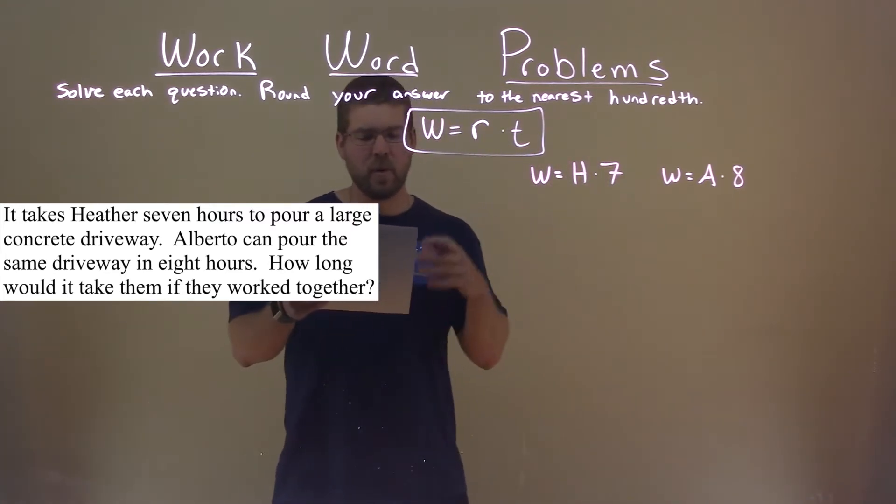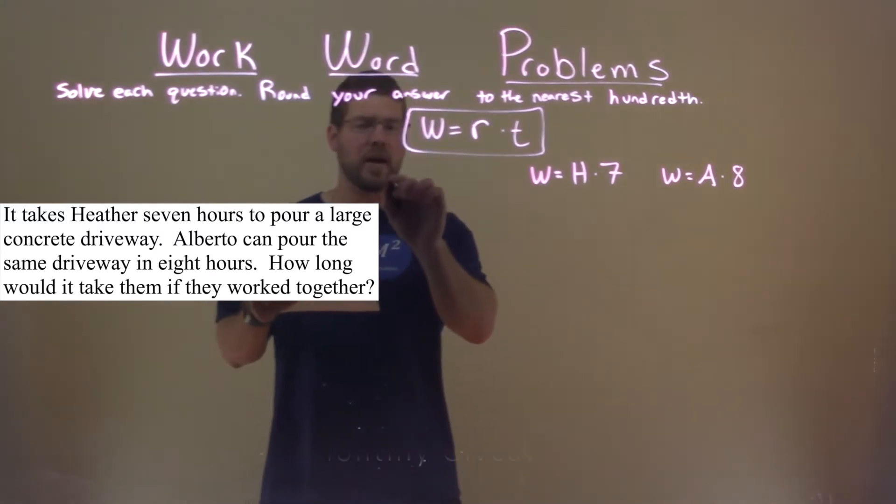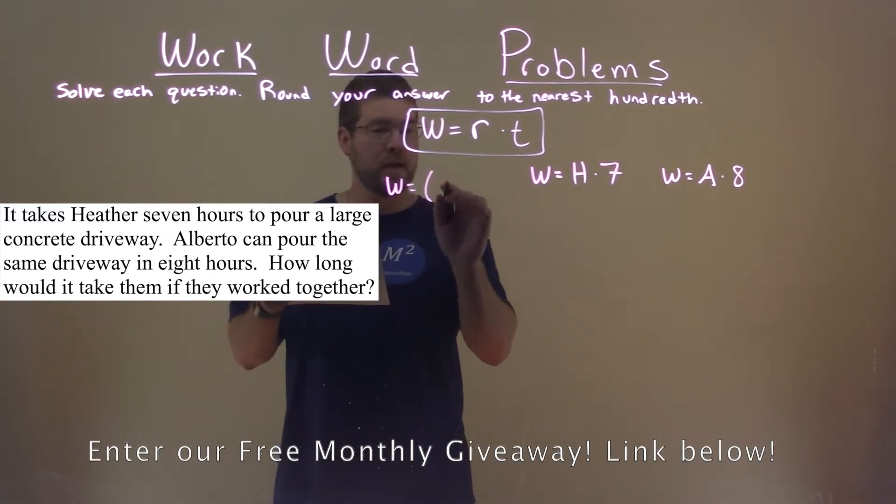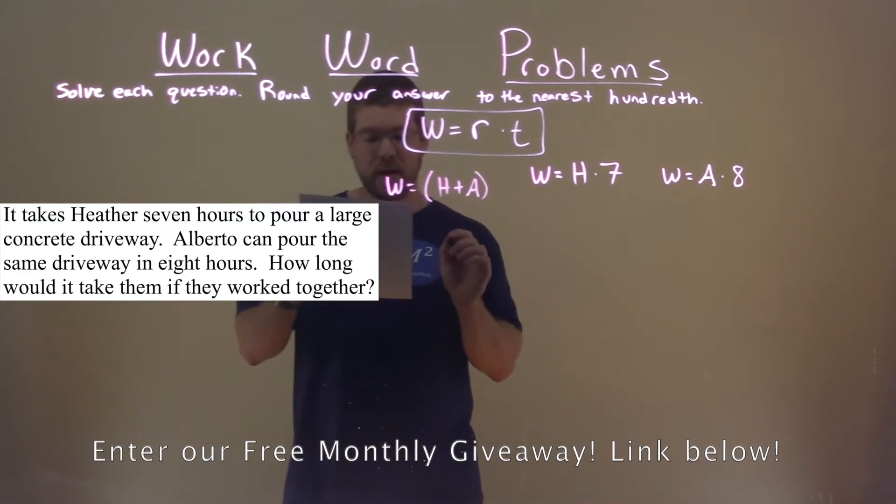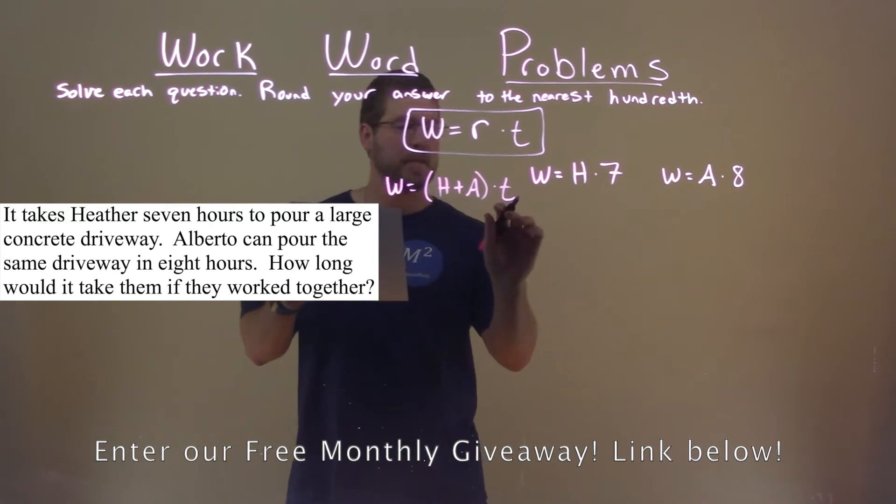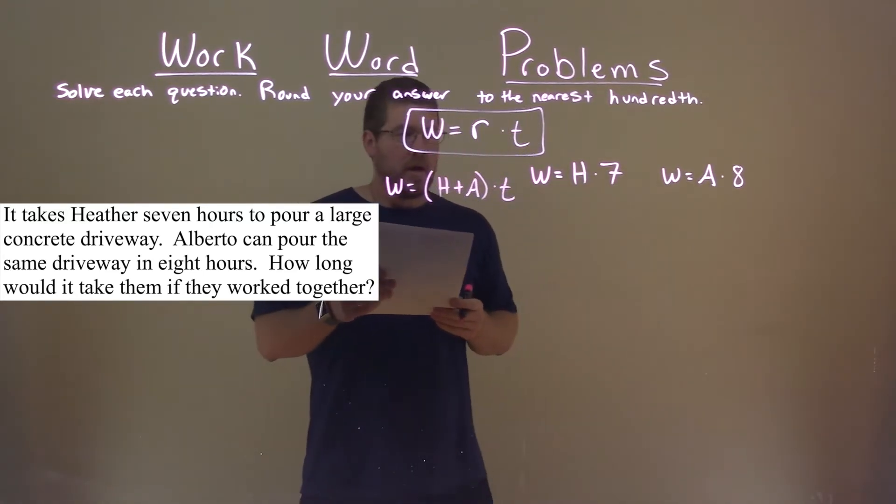Now lastly, they ask us, what would it take for them if they worked together? So that same job is going to involve them working together. So both of their work rates added, H plus A, times some time T, which we want to find.